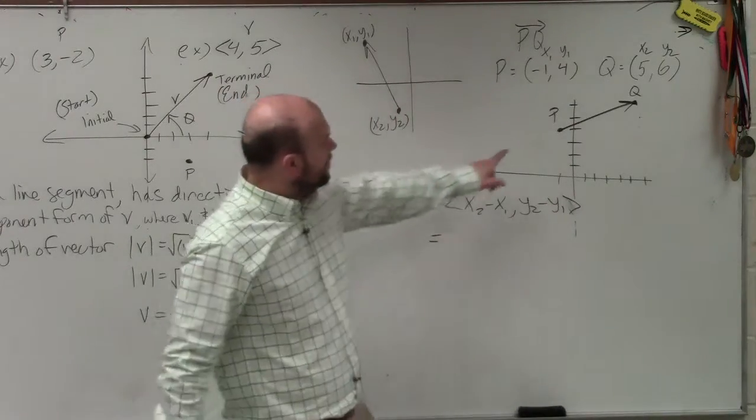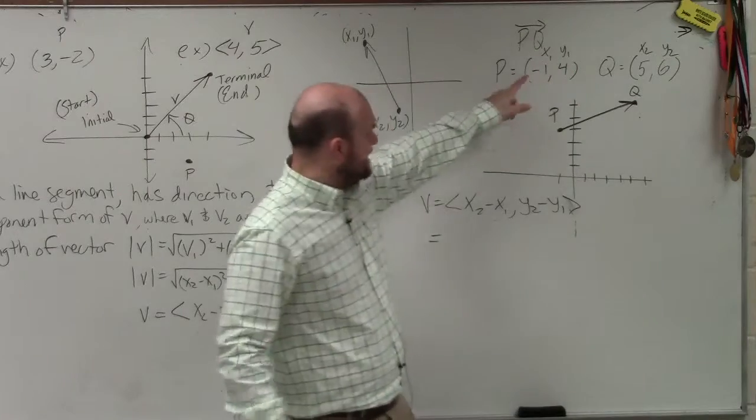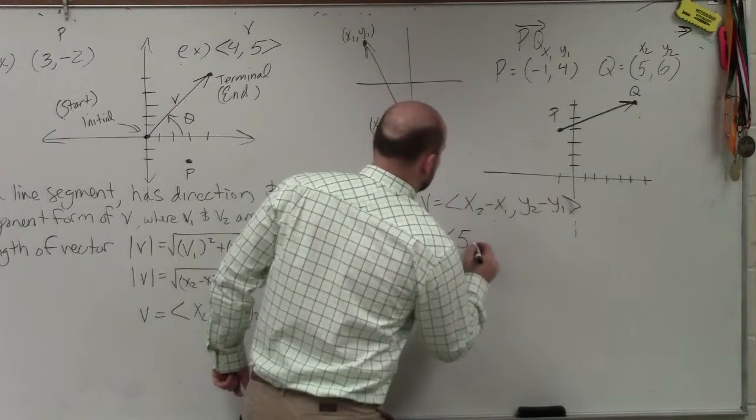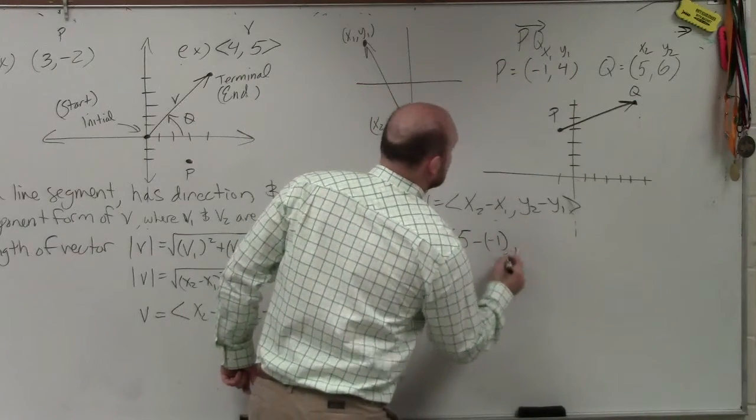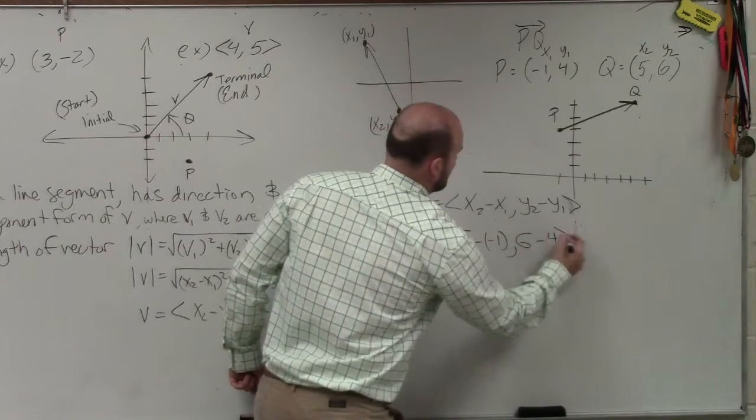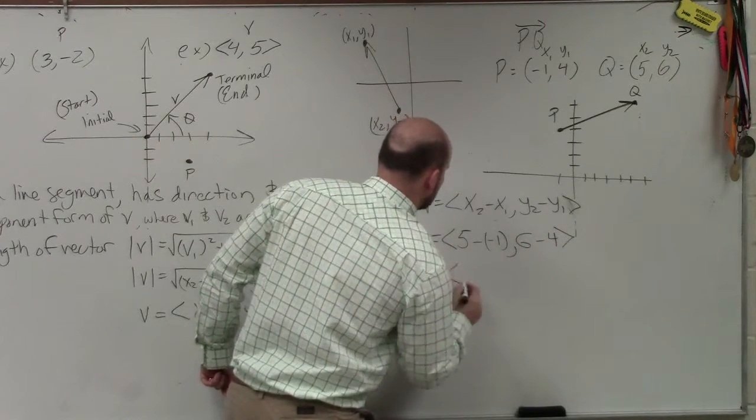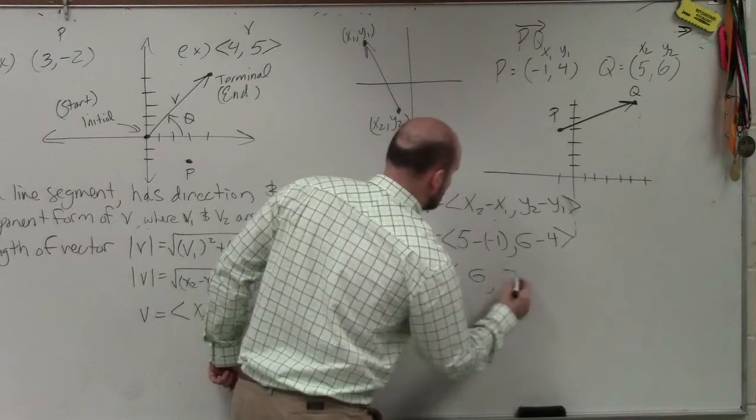So to find the component form, I'm going to do x2 minus x1. So that's going to be 5 minus negative 1 comma 6 minus 4. So therefore, I get my component form is 6 comma 2.